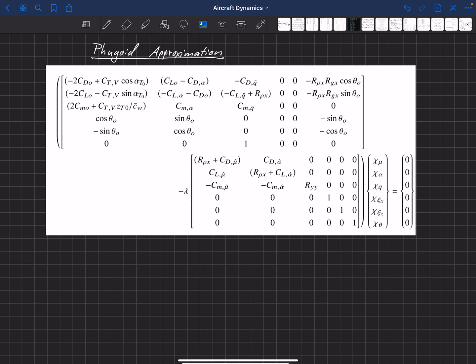It follows kind of the similar way that we looked at the short period, where we basically say changes in angle of attack are really small compared to changes in mu, and so we can drop that term. There are a few more steps, but it turns out that that approximation isn't very helpful for predicting. It's not very accurate for predicting some of the properties of the Fugoid.